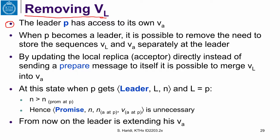We have now a situation where P is the leader and it has access to its own accepted sequence. So when P becomes a leader, it is possible to remove the need to store these two sequences, the sequence at the leader and the accepted sequence separately. And by updating the local replica directly, instead of sending a prepared message to itself, it is possible to merge the proposed sequence and the accepted sequence.